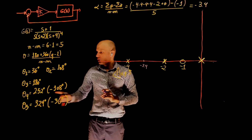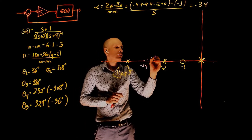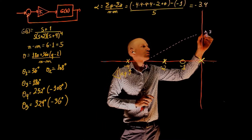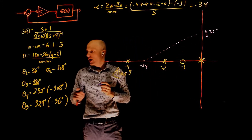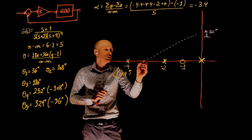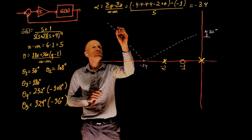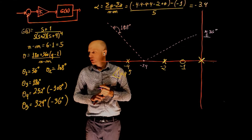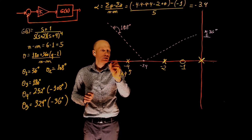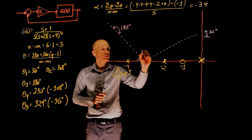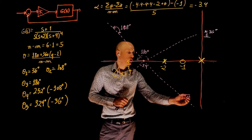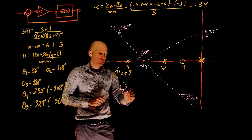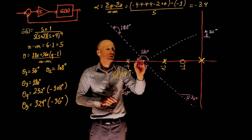The centroid of the asymptote is at negative 3.4. From there, we have one asymptote going up at 36 degrees, another going at 108 degrees, one at 180 degrees, and the symmetric ones at negative 36 degrees and negative 108 degrees. All five asymptotes are now drawn.